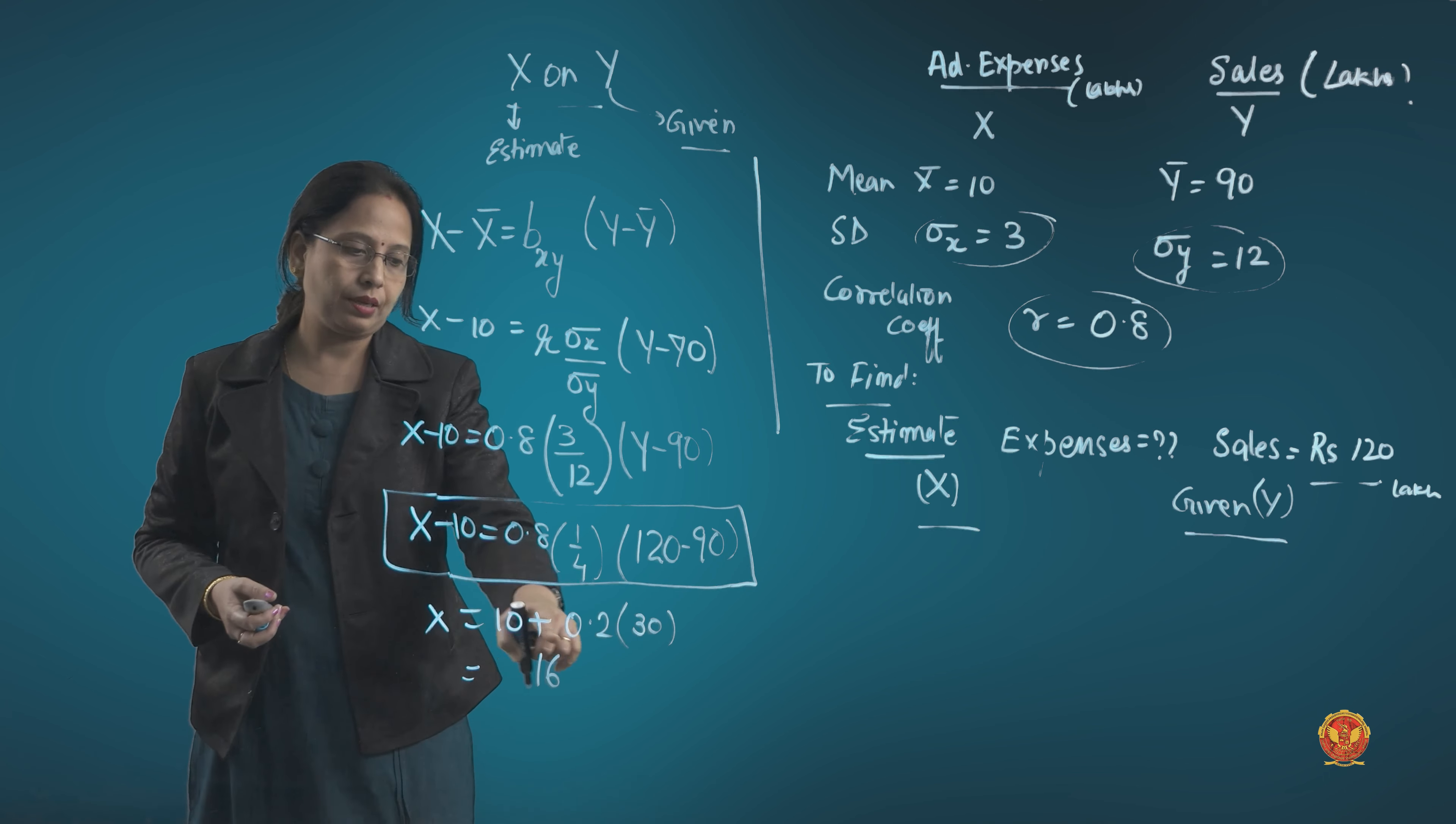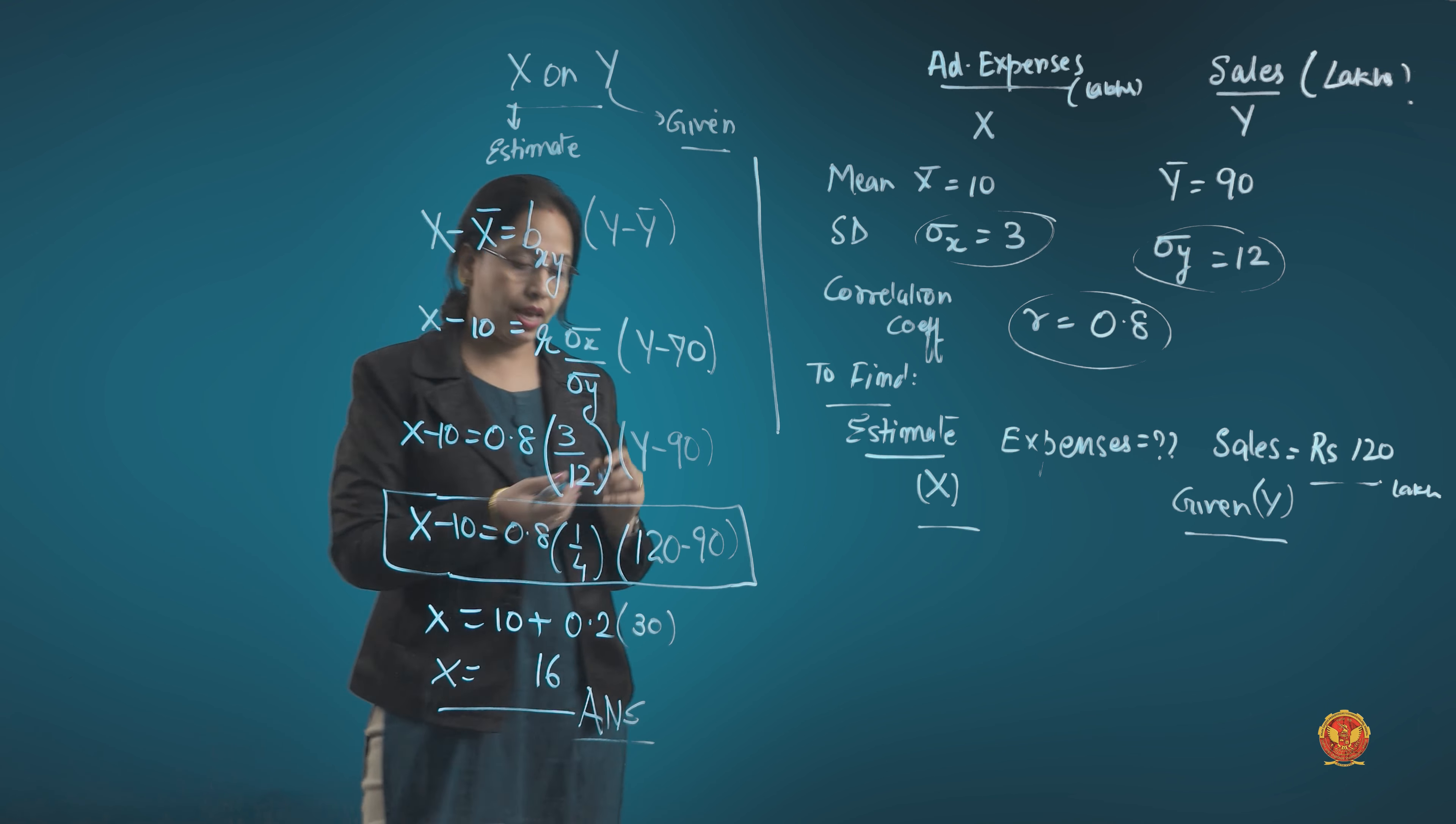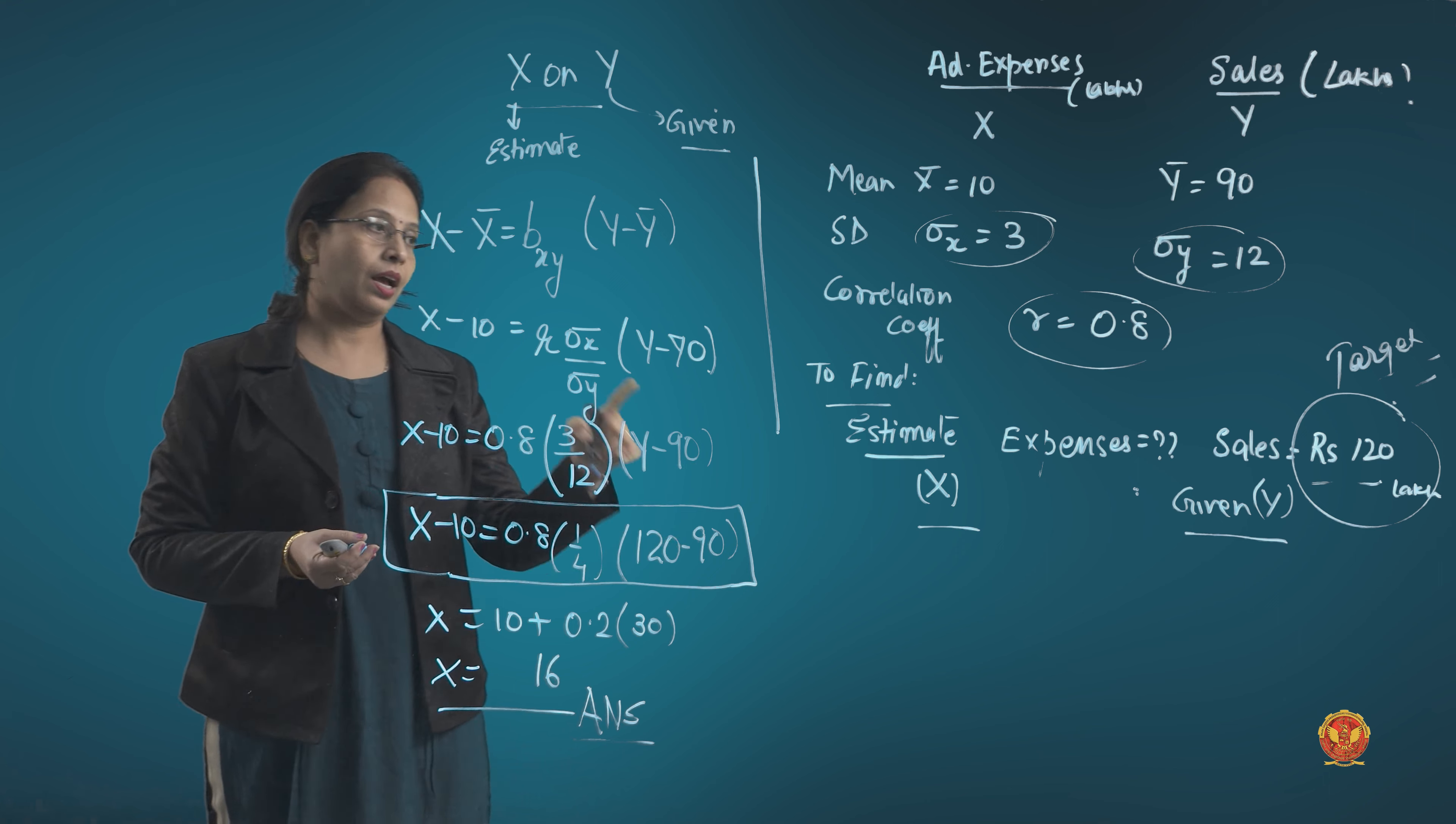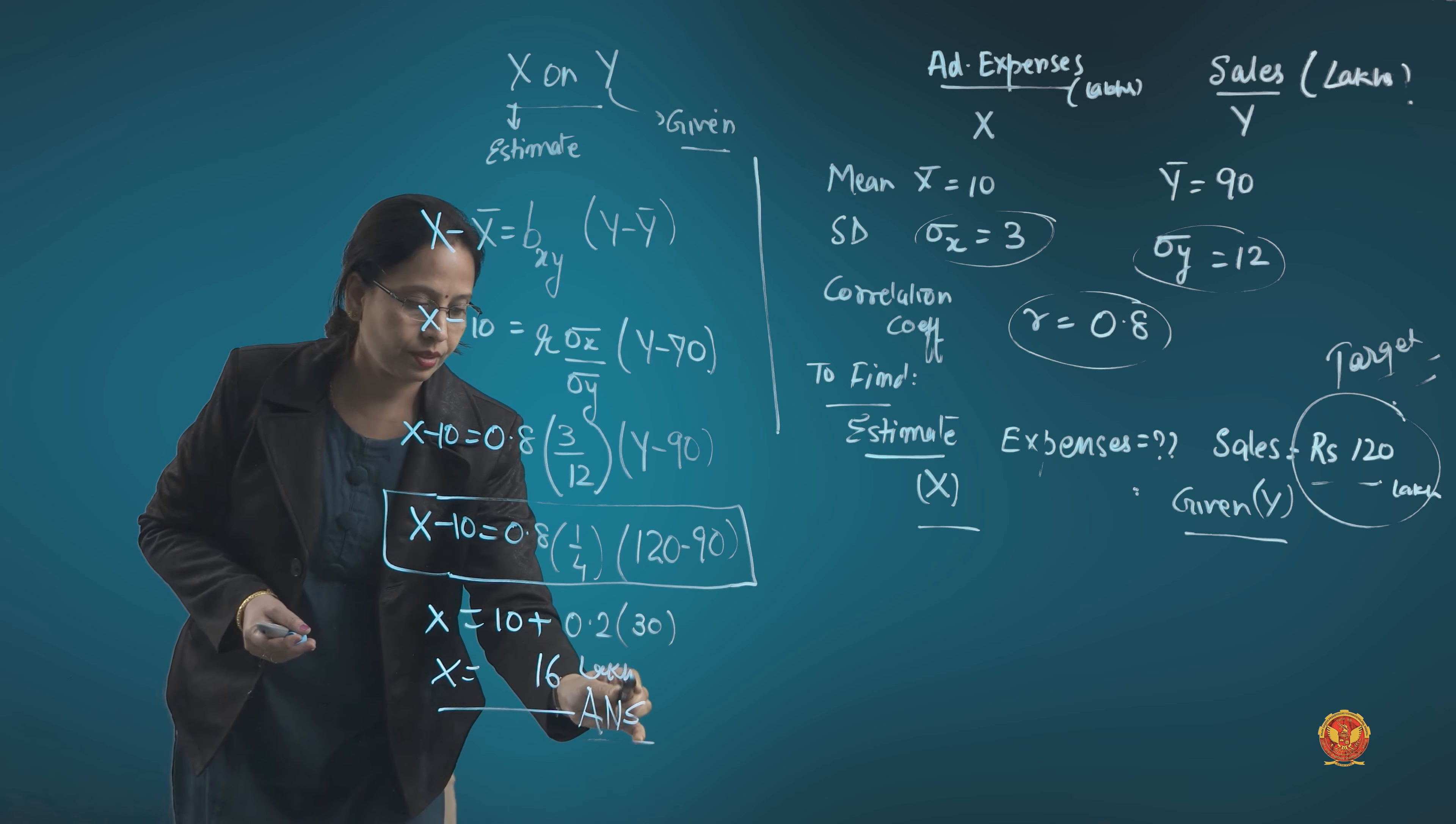So what we got? We got the value of x equal to 16. What is this? This is the answer. What they have asked us is, if we have to achieve 120 lakhs in sales, this is the target, how much money should be spent? This is the estimate which we are giving you. Because the unit is in lakh rupees, it is 16 lakh rupees.